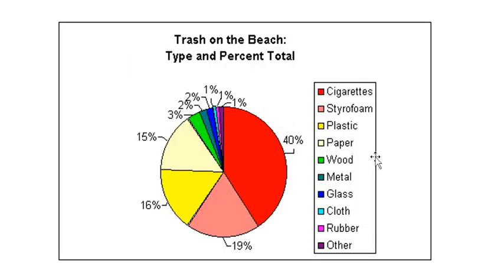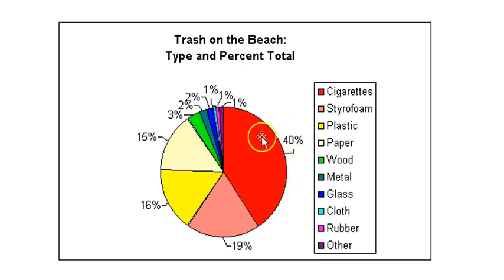The next graph is a pie graph — pretty easy to interpret. You have a title and everything is labeled so you know what all the colors represent, and you have numbers for each of them, giving you a visual representation of how much of each type of trash was found on the beach. If I asked you a specific question — what percentage of the trash on the beach was plastic — you would look at yellow and say 16%.